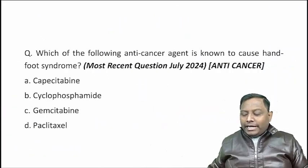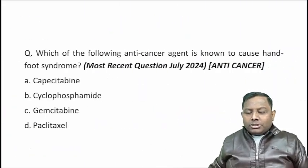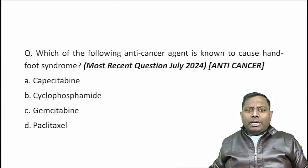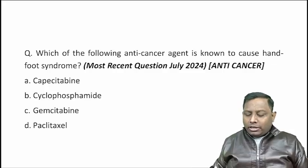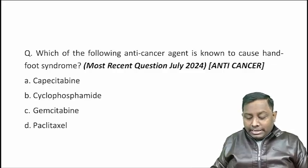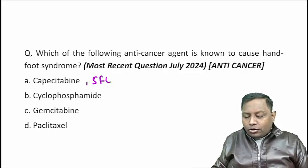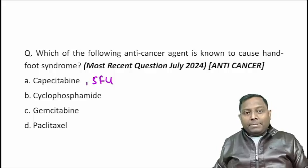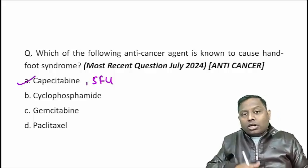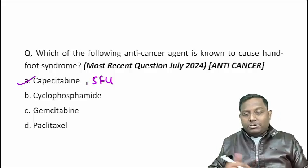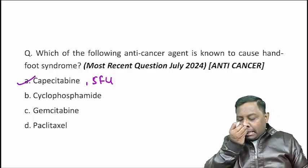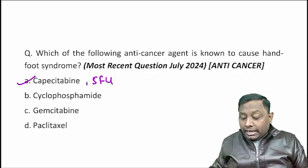Which of the following anti-cancer drugs is known to cause hand-and-foot syndrome (painful palmar-plantar erythrodysesthesia)? There are two drugs usually associated with this: one is 5-fluorouracil and the other is capecitabine. Capecitabine is a prodrug of 5-fluorouracil, so both of these are associated with hand-and-foot syndrome.